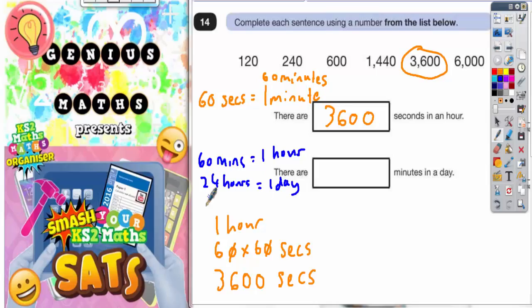So you want 60 times 24. So if we work this out, 24 times 60. Now what we could do is just do 24 times 6 and then put the zero here on the end. So let's do that because that'll be easier.